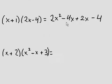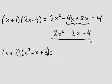So then we can combine these like terms here. Negative 4x plus 2x is just negative 2x, negative 4 stays right there, done. That's as far as we can go expanding this.